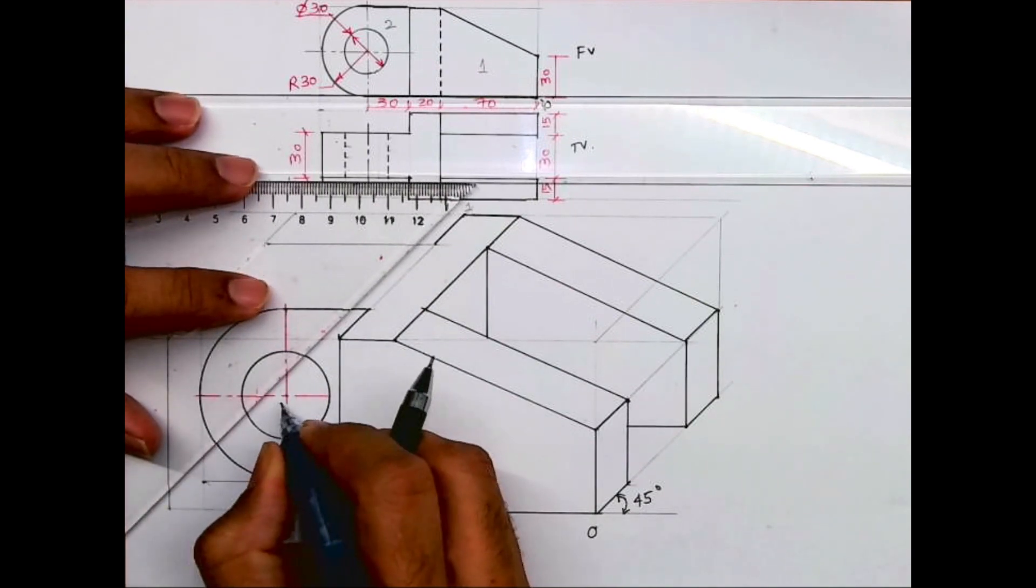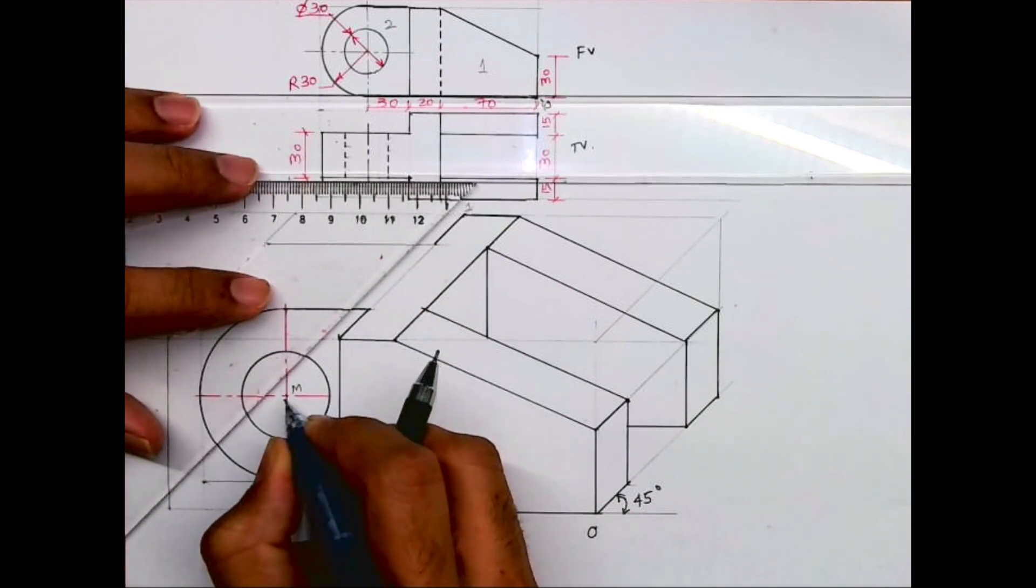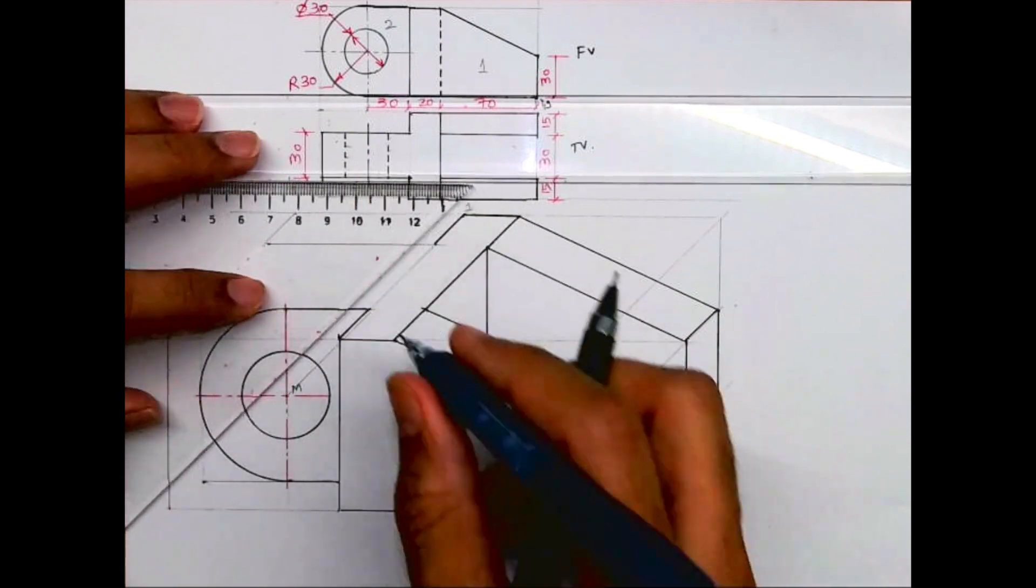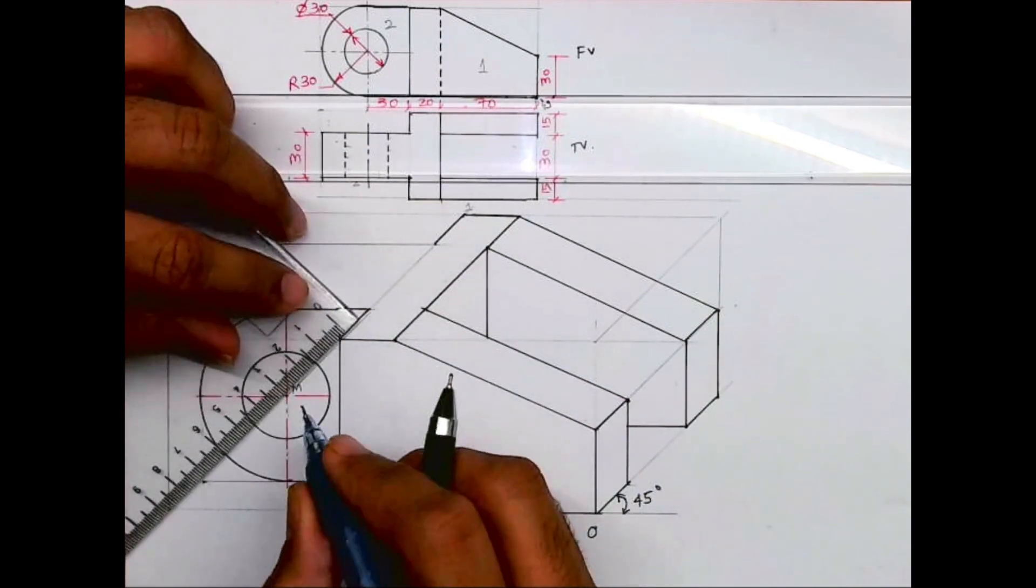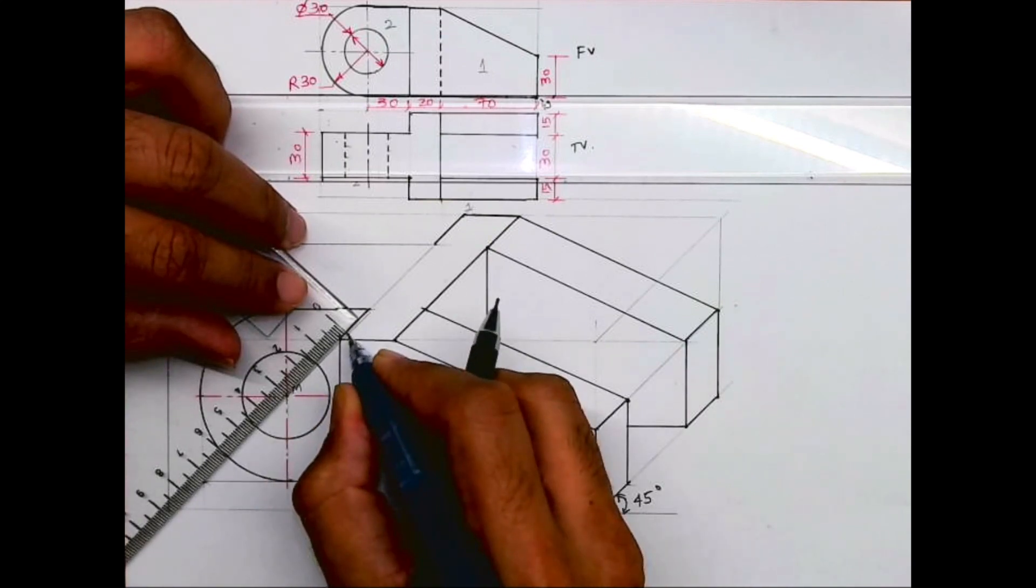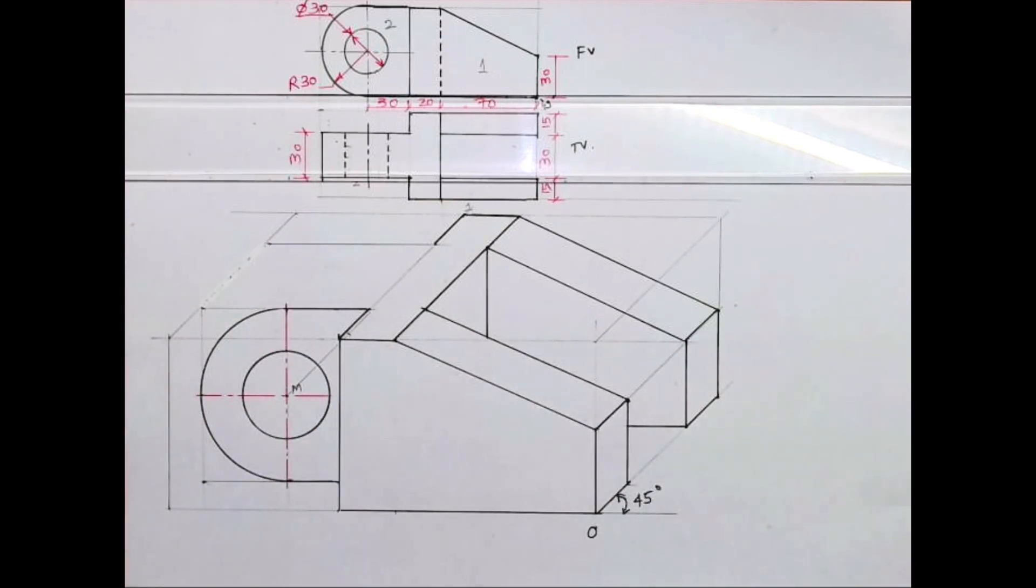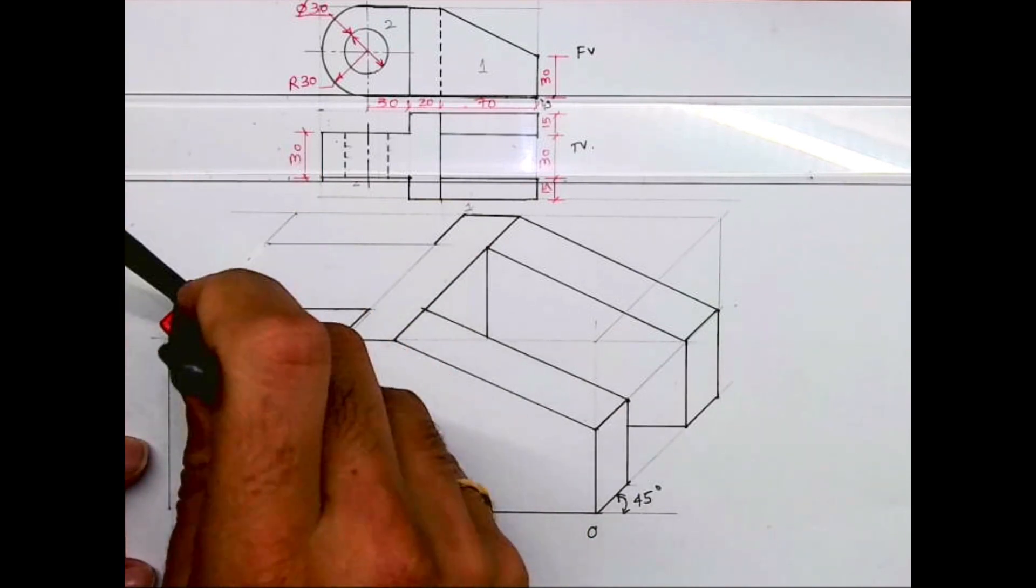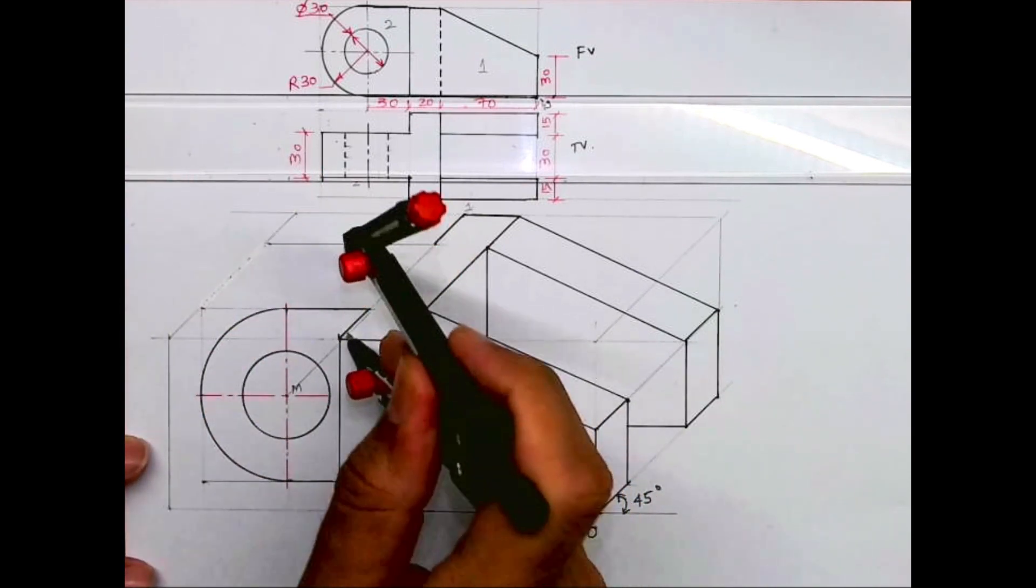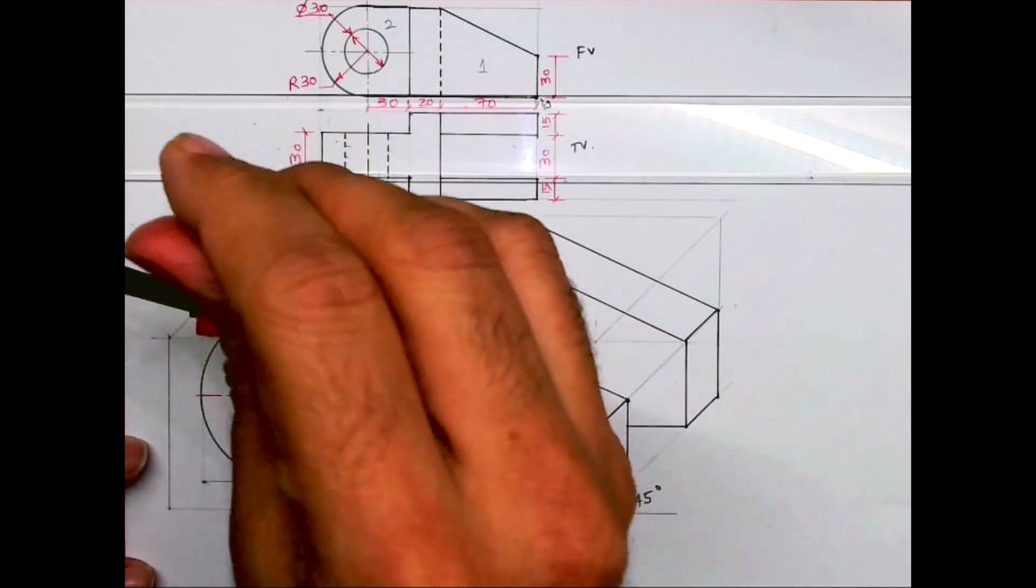So let's mark this point as M and take this point M which is the center point. Go behind by 30. Take this radius. From here you can mark radius 30.